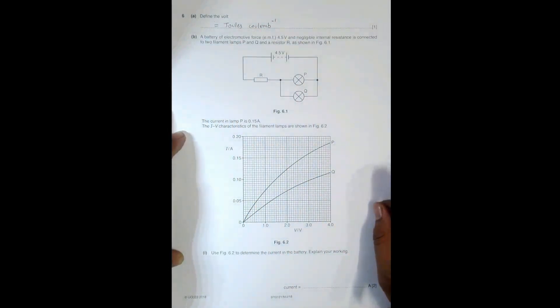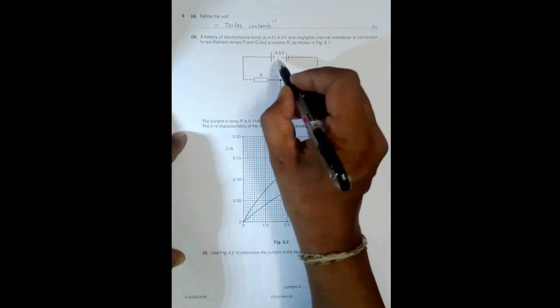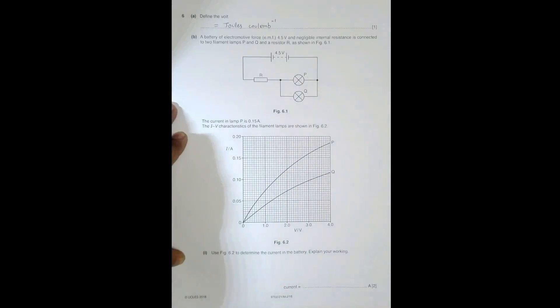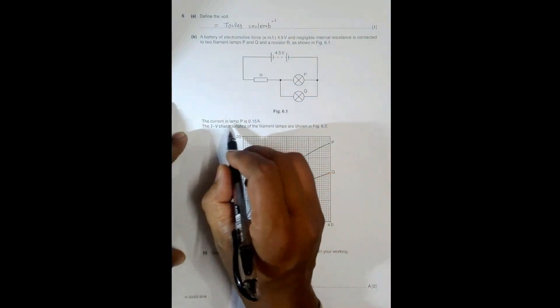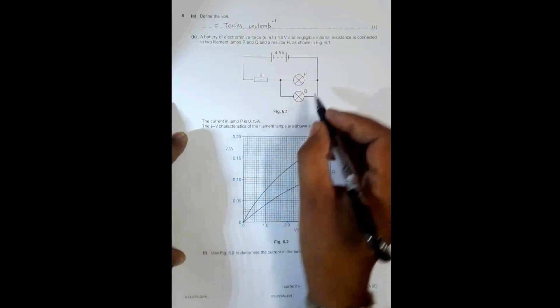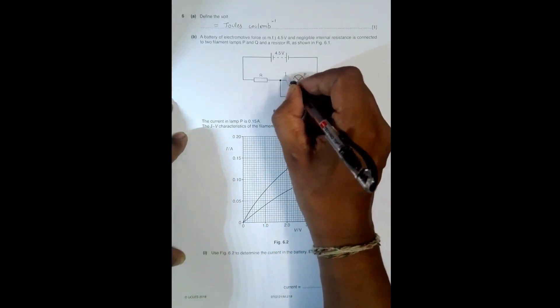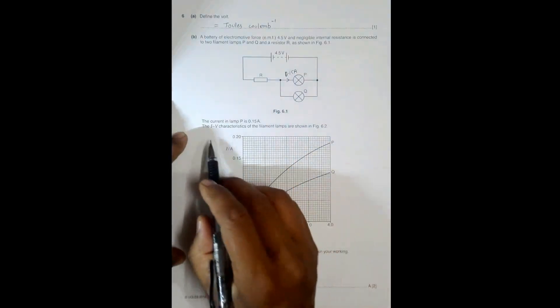The main question: a battery of EMF 4.5 V with negligible internal resistance is connected to two filament lamps P and Q which are in parallel, and that arrangement is in series with resistor R as shown in the figure. The current in lamp P is 0.15 amperes.